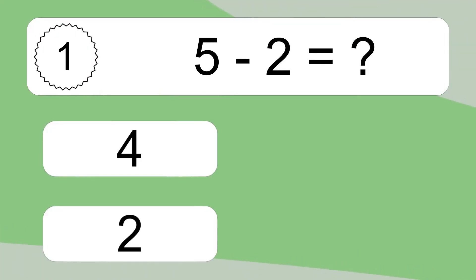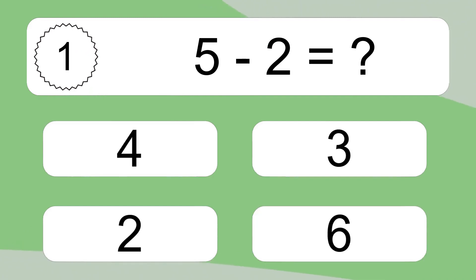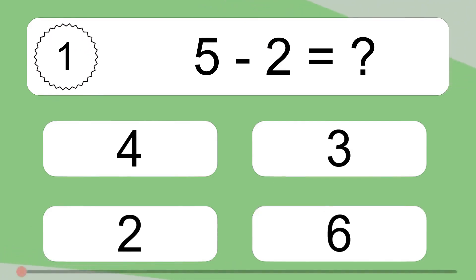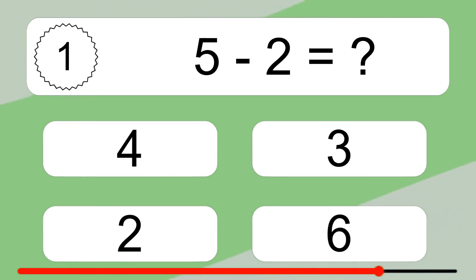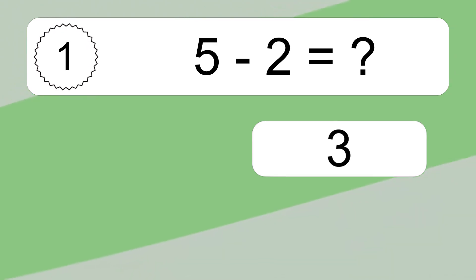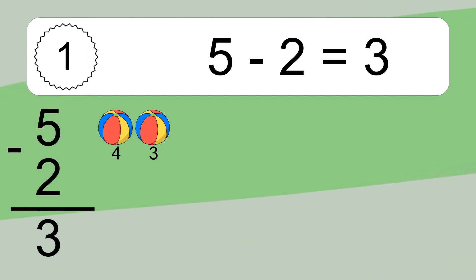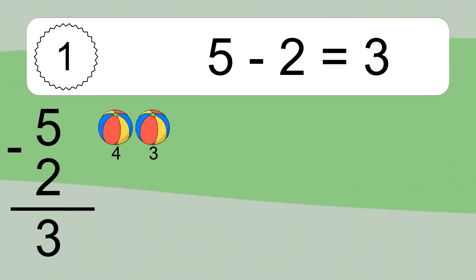5 minus 2 equals what? 5 minus 2 equals 3. Let's count it. 4, 3.